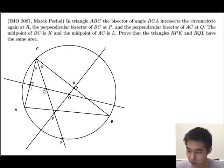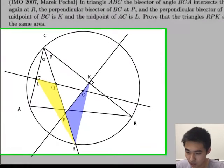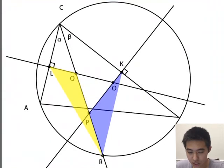First, we draw the two triangles that are in the problem statement. The first thing to notice is that since CR is an angle bisector, then we have that alpha is equal to beta.